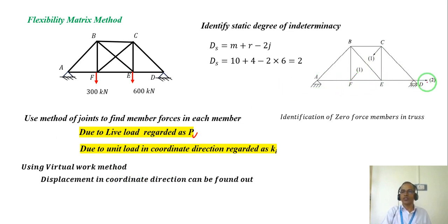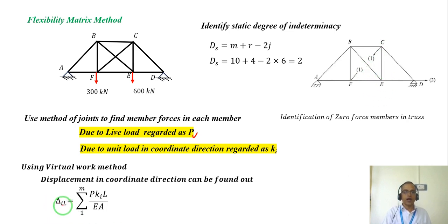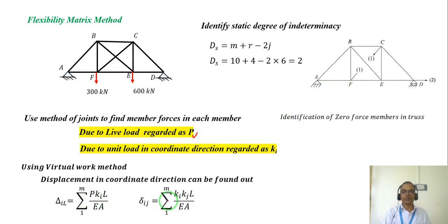External work done — load times displacement — equals the summation of all member forces squared divided by EA. The displacement in whichever coordinate direction due to live load is nothing but the summation of P times Ki times L divided by EA for all members from 1 to M. This gives the displacement due to live load.